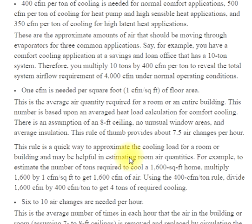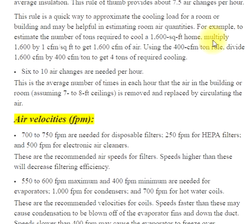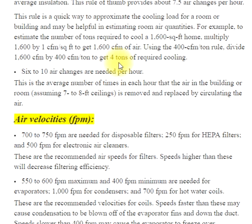For example, to estimate the number of tons required to cool a 1,600 square foot home, multiply 1,600 by 1 CFM per square foot to get 1,600 CFM of air. Using the 400 CFM per ton rule, divide 1,600 CFM by 400 CFM per ton to get 4 tons of required cooling.